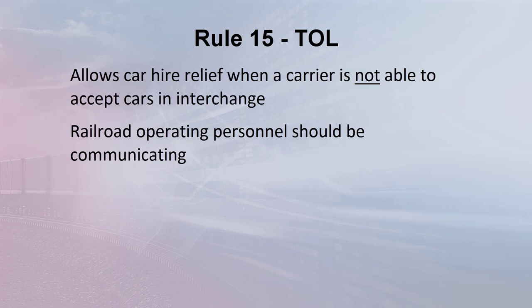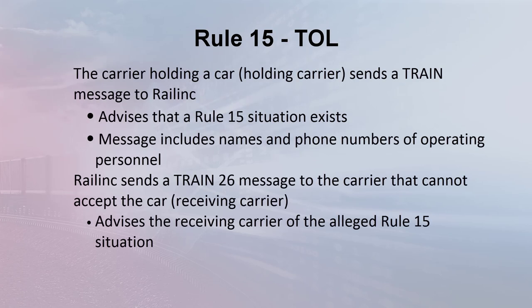CarHire Rule 15 is the third CarHire rule that allows carriers to create TOL messages. Rule 15 covers the inability of a carrier to accept cars in interchange. A key assumption of Rule 15 and the associated TOL process is that railroad operating personnel are communicating about the status of the interchange. Without this communication, many electronic messages can be passed between two carriers to no effect. The holding carrier attempting to interchange sends a Train message to Railink advising that the receiving carrier cannot accept a car or group of cars in interchange, and Railink sends a Train message to the receiving carrier to advise that Rule 15 relief has been requested.